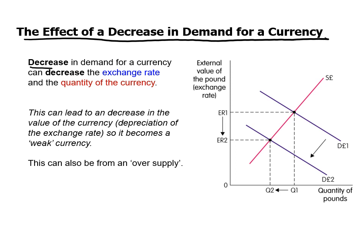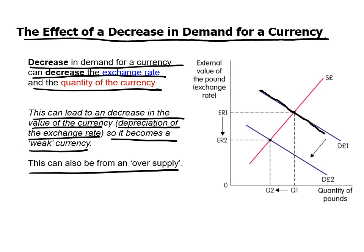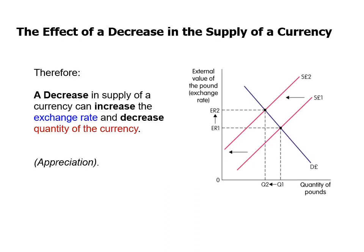On the other hand, a decrease in demand for a currency decreases the exchange rate and the quantity, leading to depreciation — a weaker currency. This can also result from oversupply. If supply stays the same but demand falls, the demand curve shifts left, the exchange rate drops from ER1 to ER2, the quantity demanded falls, and we become a weaker currency. Normally you want your currency to appreciate, not depreciate.